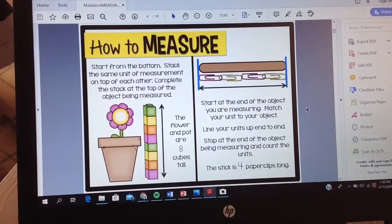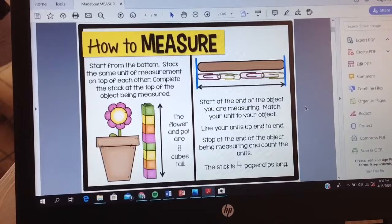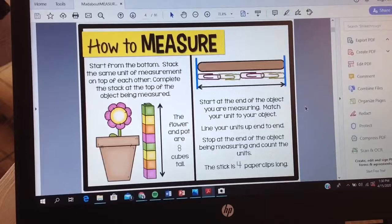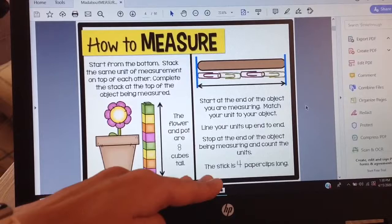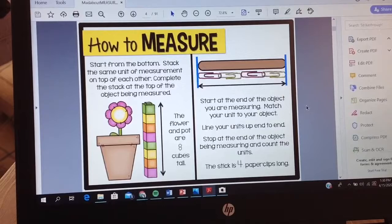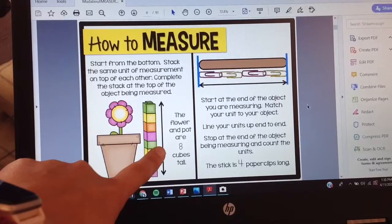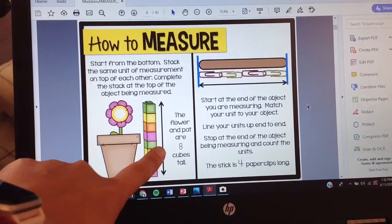Let's go ahead and look at our rules. It says start from the bottom, stack the same unit of measurement on top of each other, complete the stack at the top of the object being measured. So what I want to point out to you is that they started at the very bottom. These things were at the same level like we talked about on Monday. They also used the same unit of measurement. They used cubes or blocks the entire time. They didn't decide, okay I want to do a block here and then I'm going to use some chopstick here and then you know what I really like an ice cream cone so I'm going to put one there. No, they used the same unit of measurement that way they could say the flower and pot are eight cubes tall.